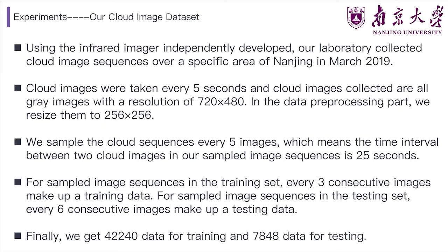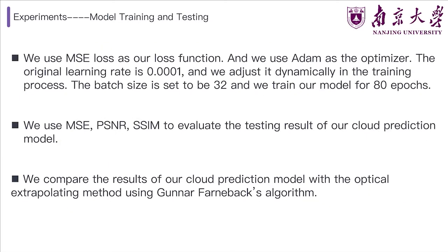For sampled image sequences in the training set, every three consecutive images make up a training sample. The first and second images serve as the input of DVF, and the third serves as the label. For sampled image sequences in the testing set, every six consecutive images make up a testing sample. The first and second cloud images serve as the input of our cloud prediction model, and the following four cloud images serve as the ground truth. We use MSE loss as our loss function and ADAM as the optimizer. The original learning rate is 0.0001, and we adjust it dynamically during training. The batch size is set to 32. We use MSE, PSNR, and SSIM to evaluate the testing results — these three indexes are the main indexes for image quality evaluation.